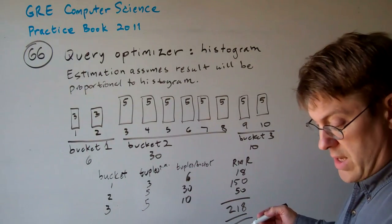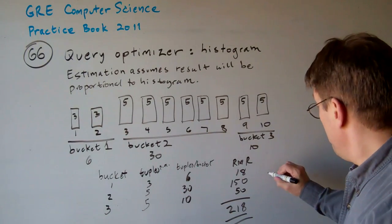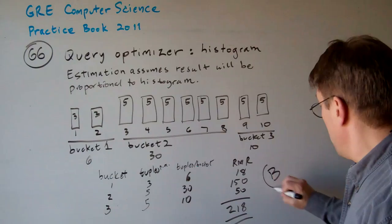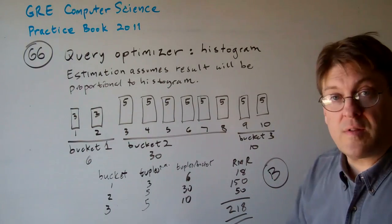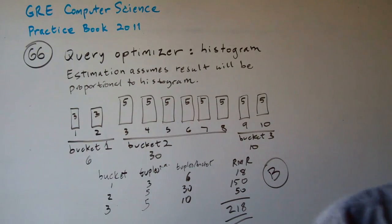So the answer is B — 218. That's the rough estimate of how many tuples will result from the self-join intermediate table. The answer for Question 66 is B, 218.